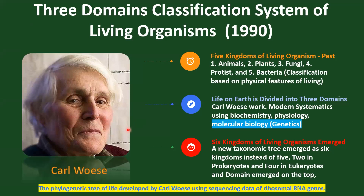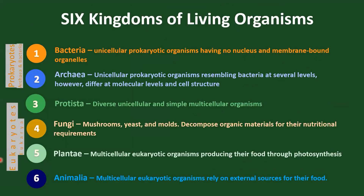Remember, all living things are grouped into three domains. In addition to bringing domains to the top of the hierarchy, this new classification system added an additional kingdom to the prokaryotic group of organisms. This led to bifurcating Bacteria into two kingdoms — Archaea and Bacteria — initially grouped together. The eukaryotic group remains unchanged, with four kingdoms as proposed in the old classification system.